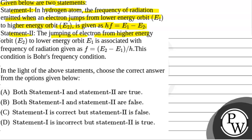Statement 2: The jumping of electron from higher energy orbit E2 to lower energy orbit E1 is associated with frequency of radiation given as Hf is equal to E2 minus E1 by H. This condition is Bohr's frequency condition. In the light of the above statements, choose the correct answer from the options given below.